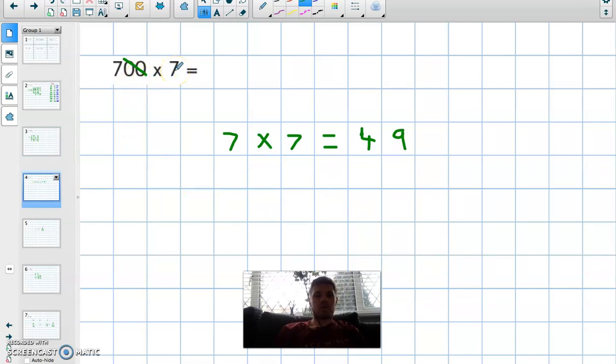Question 3: 700 multiplied by 7. So what I've done to make it easier for myself is I've got rid of the two zeros to make 7 multiplied by 7. I know the answer is 49, then I need to remember to put on the two zeros at the end.